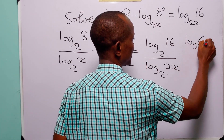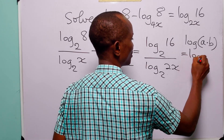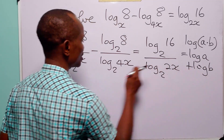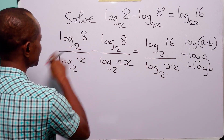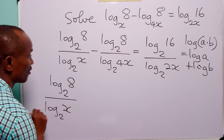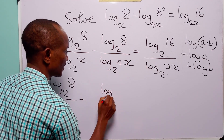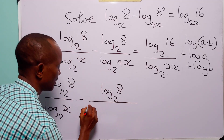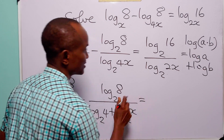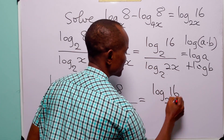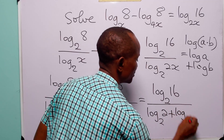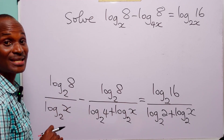Now let us remember that log(a × b) = log a + log b. We will use this identity to expand the two denominators. When we do that, the equation becomes log base 2 of 8 over log base 2 of x, minus log base 2 of 8 over log base 2 of x plus log base 2 of 2, plus log base 2 of x.